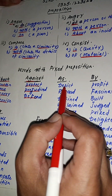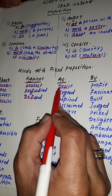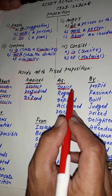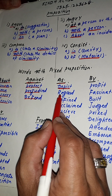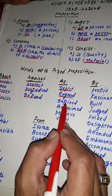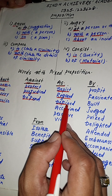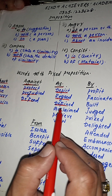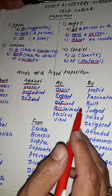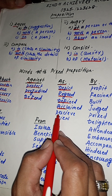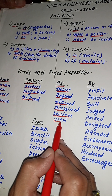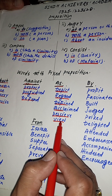We have the preposition AS. The following verbs take the preposition 'as': depict as, regard as, regarded as, defined as, acclaimed as, perceive as, and view as.